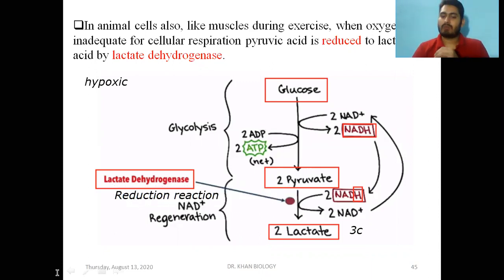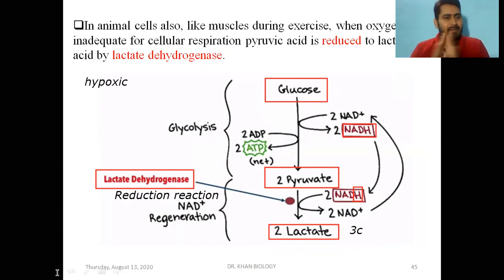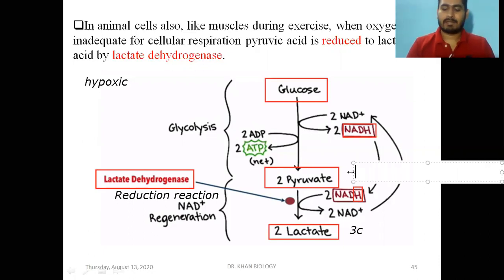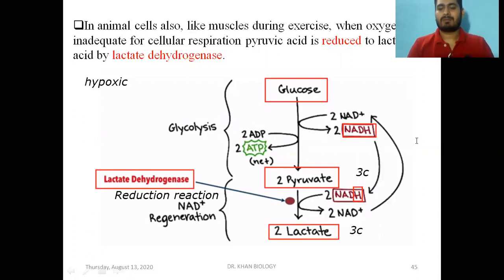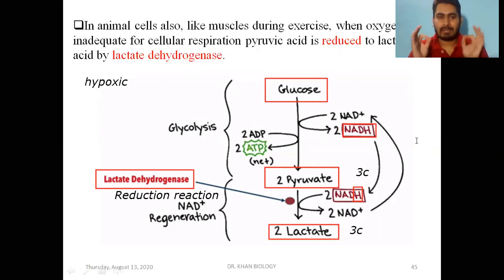This reduction reaction will produce lactate. Importantly, in lactate formation, there is no release of carbon dioxide, because the decarboxylase enzyme is not involved here. This is why pyruvic acid, which is a 3-carbon compound, becomes lactic acid, which is again a 3-carbon compound. Remember: lactate dehydrogenase for lactic acid; alcohol dehydrogenase for ethanol.